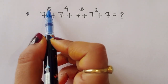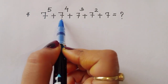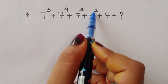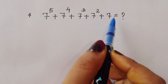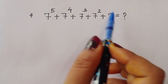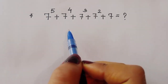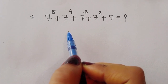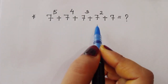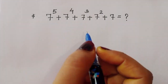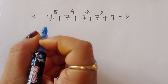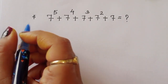We are given 7 power 5 plus 7 power 4 plus 7 power 3 plus 7 power 2 plus 7. We have to find out the value of this expression. We are solving this question without using a calculator, so let's see how we can solve this in an easy way.